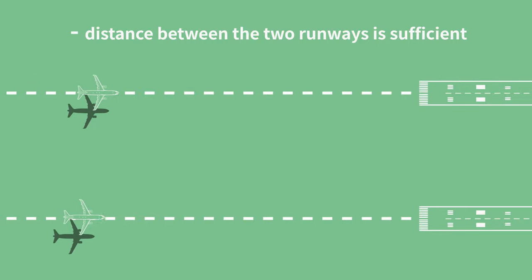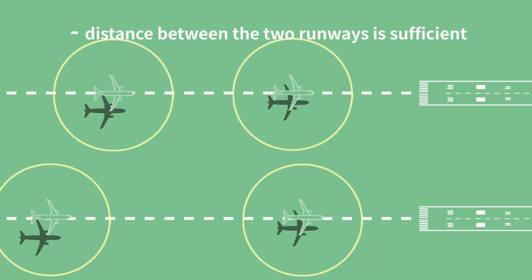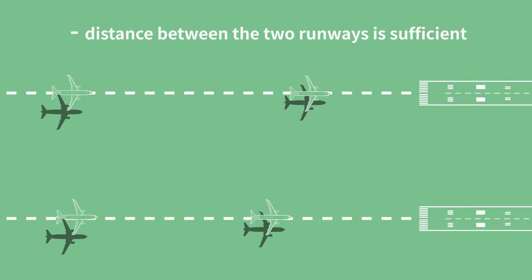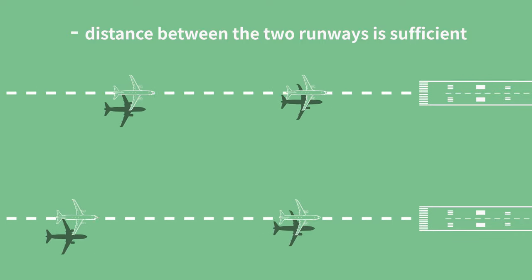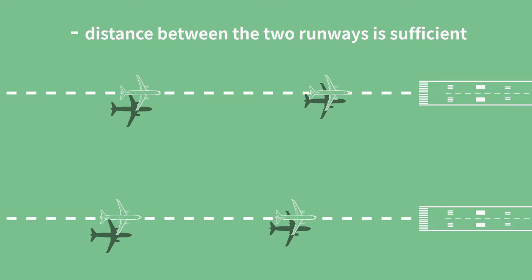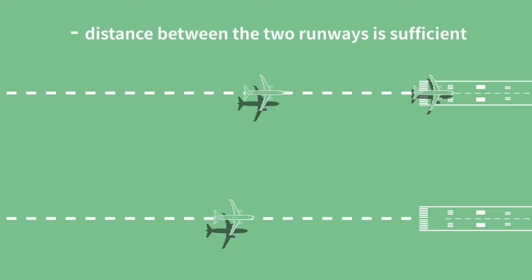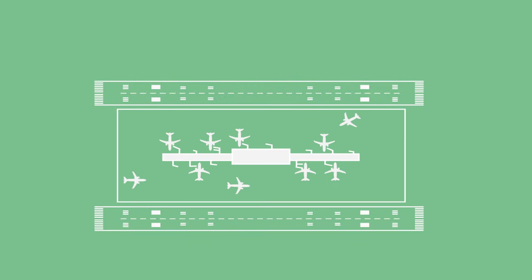Conversely, if the distance between the two runways is sufficient, the independent operation is possible without affecting the operation of the other runway. For this independent runway operation, the runway centerline must be separated by more than 4,300 feet, and most major airports design this space as aprons and terminals.